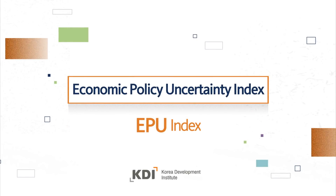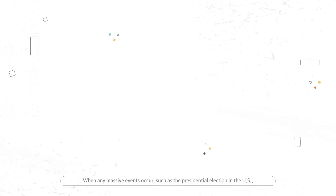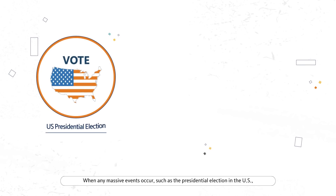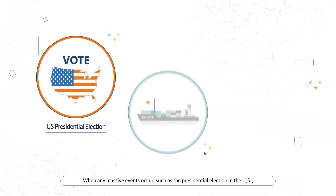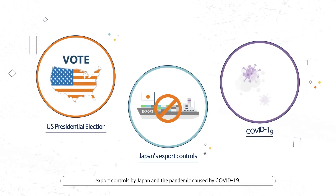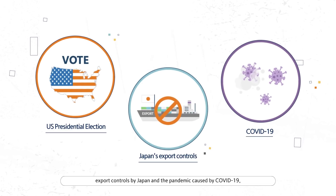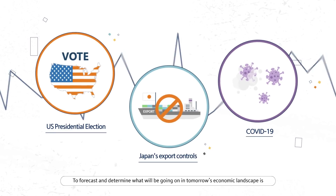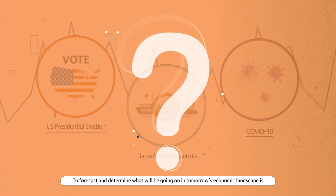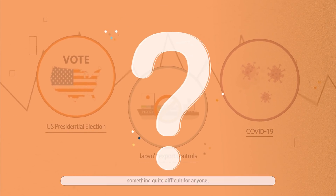Economic Policy Uncertainty Index. When any massive events occur, such as the presidential election in the US, export controls by Japan, and the pandemic caused by COVID-19, to forecast and determine what will be going on in tomorrow's economic landscape is something quite difficult for anyone.